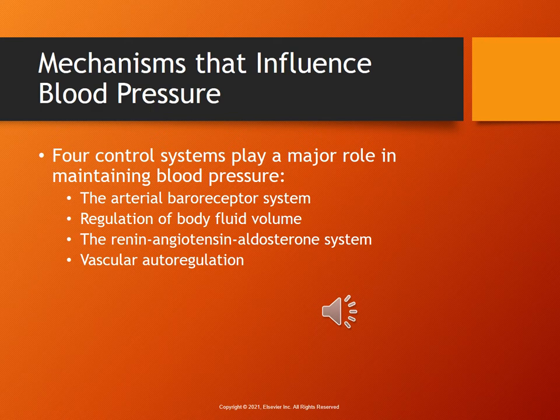There are four systems that play a major role in maintaining our blood pressure. We have an arterial baroreceptor system, where the arterial baroreceptors monitor the level of arterial pressure and counteract a rise in arterial pressure. Regulation of body fluids is another control system — changes in blood volume and fluid volume affect the systemic arterial pressure. If the kidneys are functioning adequately, a rise in systemic arterial pressure produces excessive voiding, which will cause a fall in pressure. The renin-angiotensin-aldosterone system plays an important role in regulating blood volume and systemic vascular resistance, influencing cardiac output as well as arterial pressure. Then we have vascular autoregulation, which refers to the intrinsic ability of an organ to maintain constant blood flow despite changes in blood pressure.